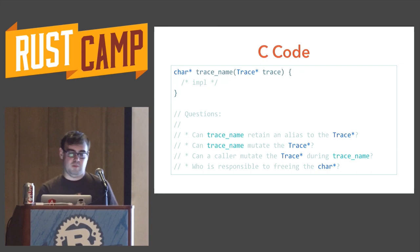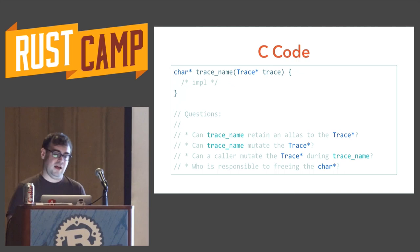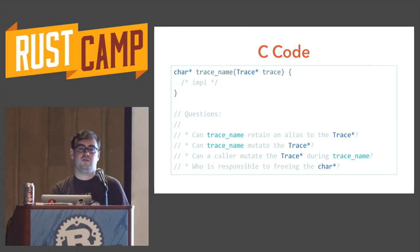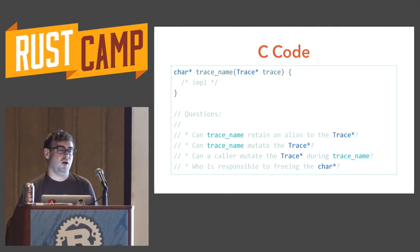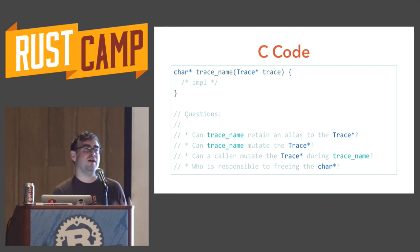Here is a function you can write in C — we have a trace object, a thing that's collecting up information before it gets sent to the server. The function returns a char star, takes a trace pointer, and has some implementation. There are a bunch of questions here: Is the trace_name function allowed to retain an alias to the trace star? Is it allowed to mutate it? Can a caller mutate the trace star during the call? And who is responsible for freeing that char star? Basically all these questions are left up to the imagination of the implementer. In a really good library, somebody will write documentation that explains it, but you have to go through this checklist for every parameter and return value.